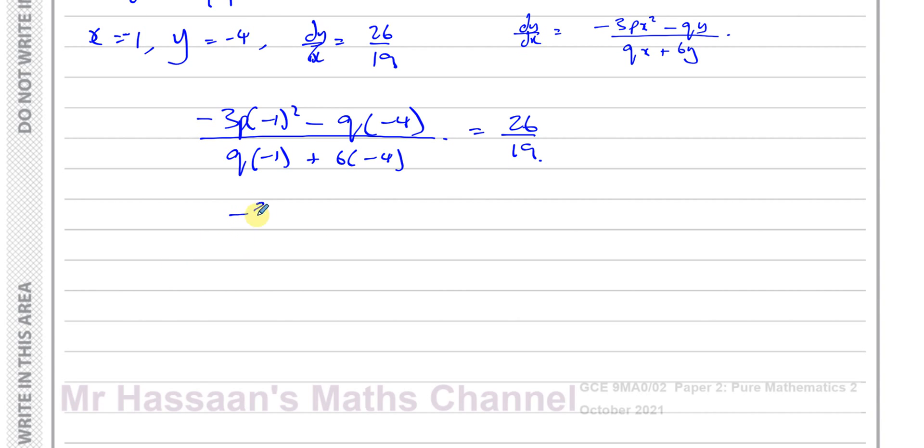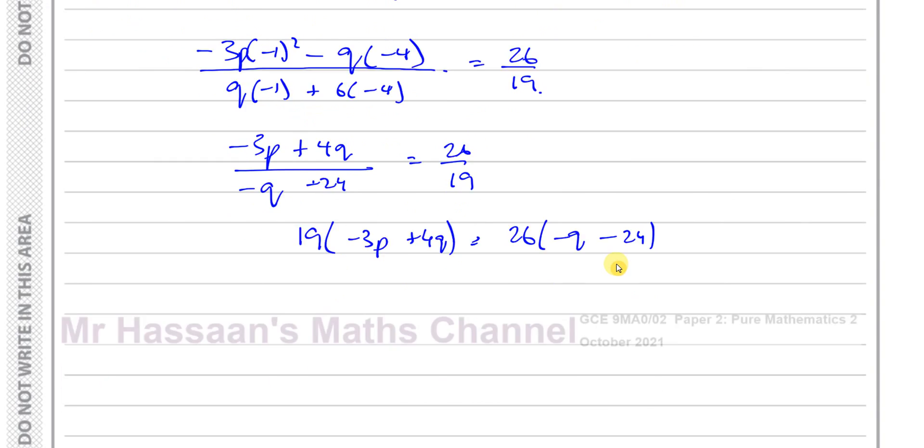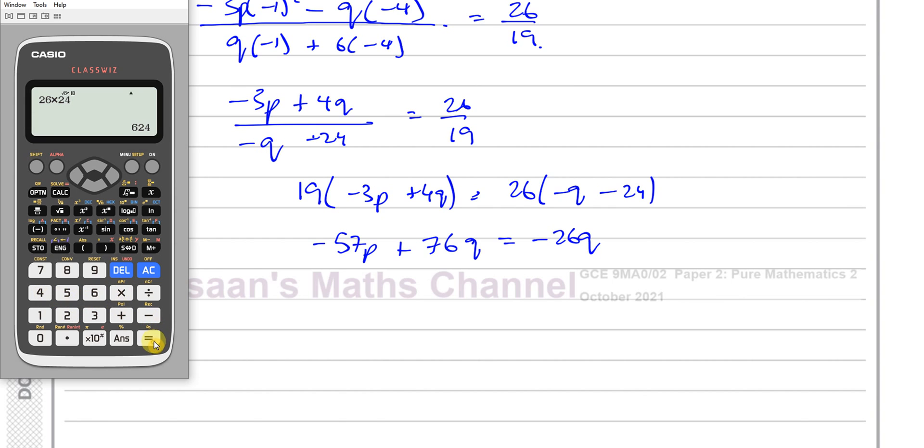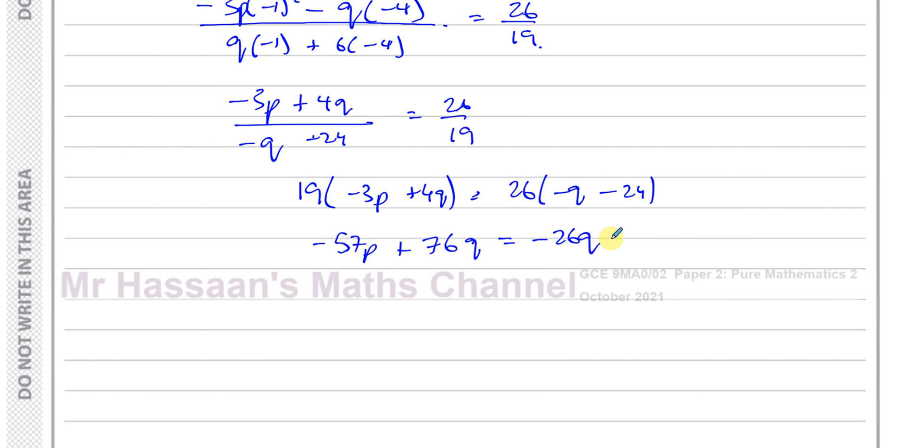So this is going to give me -3p + 4q over -q - 24 equals 26/19. If I cross-multiply, I have 19 times (-3p + 4q) equals 26 times (-q - 24). So I have 3 times 19. That's 30 plus... That's 57. -57p plus 4 times 19. That's like 4 times 20 - 4. That's 76q equals -26q. And you've got 26 times 24, which is 624. Yeah, that's -624.